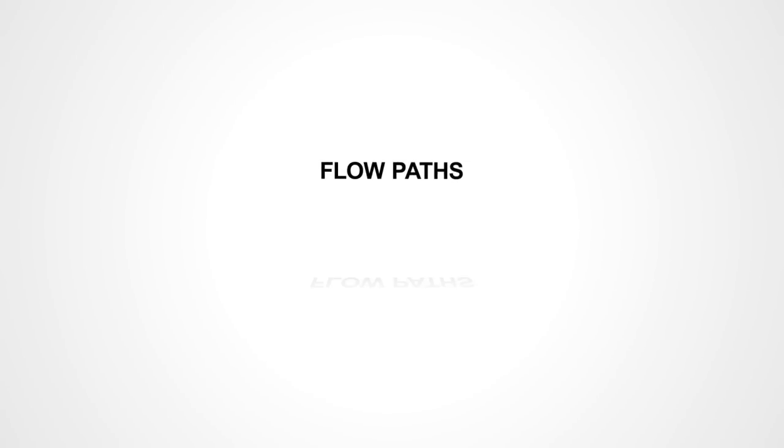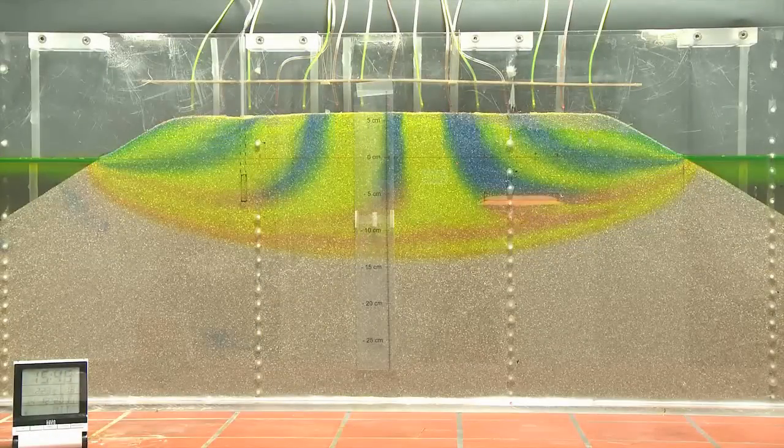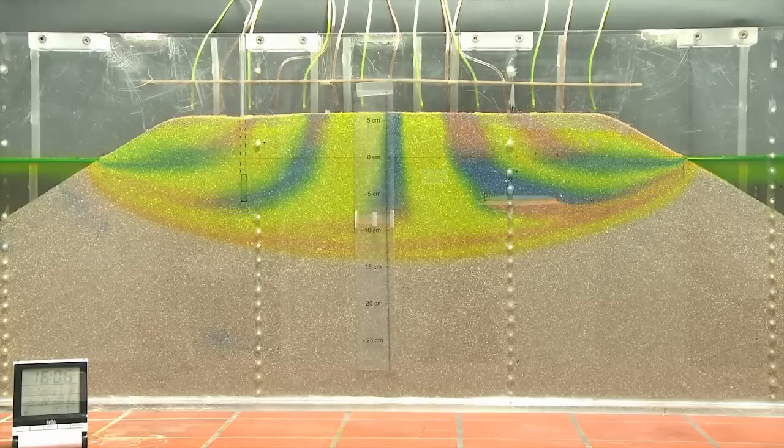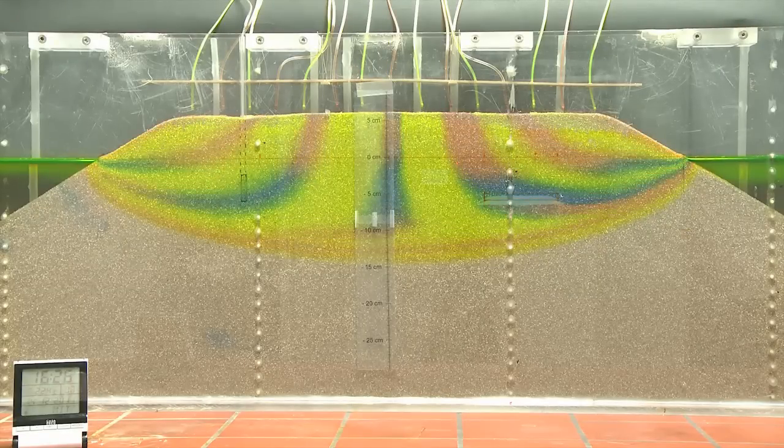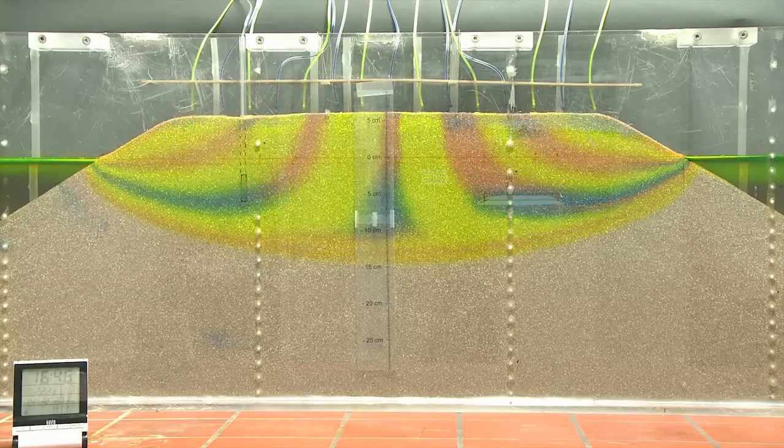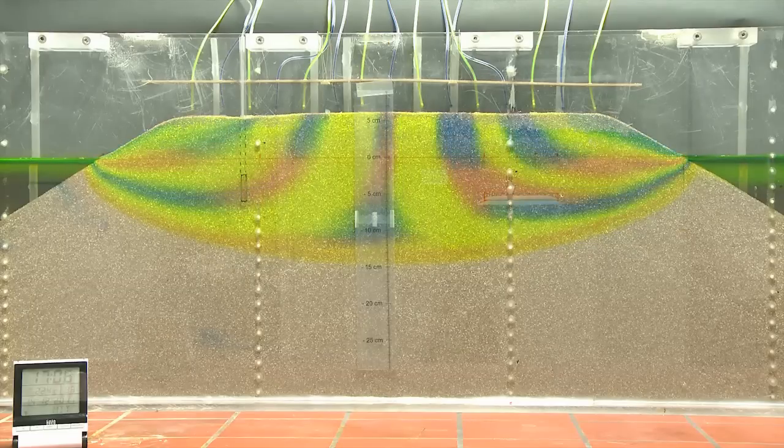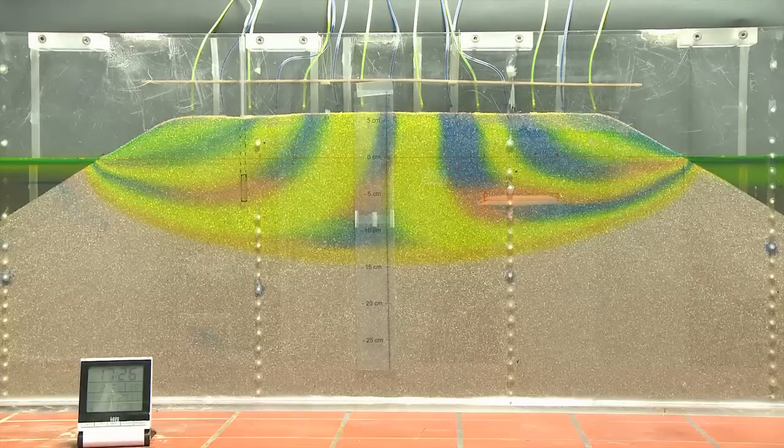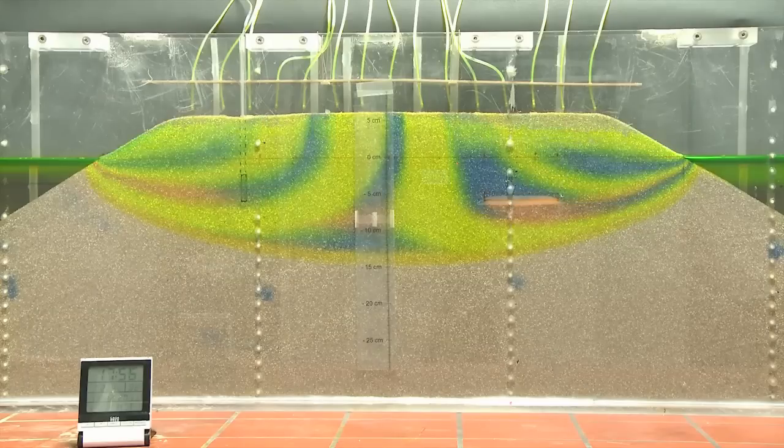Flowpaths: Flowpaths are visualized by switching every second recharge dripper to another color. Note that all flowpaths are in contact with the outflow zones at the sides of the island at all times.